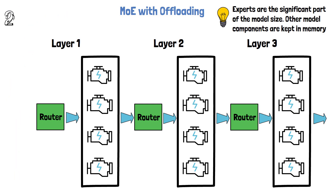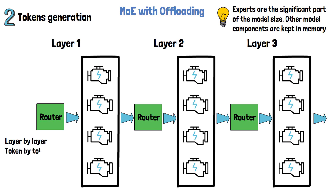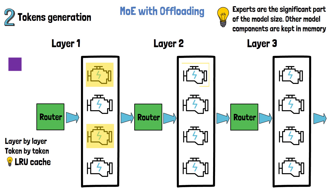In the second phase of generative inference — token generation — things get more interesting. The token generation phase is not only done layer by layer, but also token by token, so naively loading and unloading all experts for each generated token results in excessive overhead. To address this, the researchers suggest using an LRU cache. When generating the first token we start with the first layer. For example, if the activated experts are the first and third, only those experts are loaded and kept in memory.